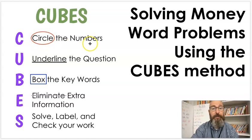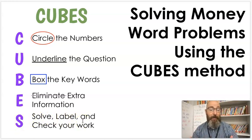So let's go over CUBES real quick. C is circle the numbers. U, underline the question. B, box the keywords. E, eliminate extra information if there is any. And S, solve, label, and check your work. So I want to make sure we remember that. And of course, I'll have it on the screen while we're solving them just like I did last time.